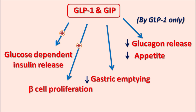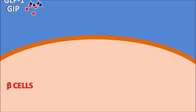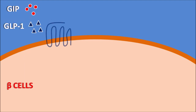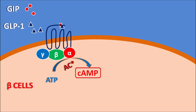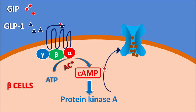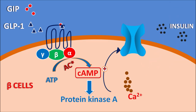GIP and GLP-1 act on beta cells through G protein-coupled receptors with alpha, beta, and gamma subunits. Binding stimulates the adenylate cyclase pathway, converting ATP into cyclic AMP. Cyclic AMP acts as a secondary messenger that activates protein kinase A, a phosphorylating enzyme that promotes inward calcium channels. Calcium enters the cells and promotes exocytosis, releasing insulin out of the beta cells in a glucose-dependent manner.